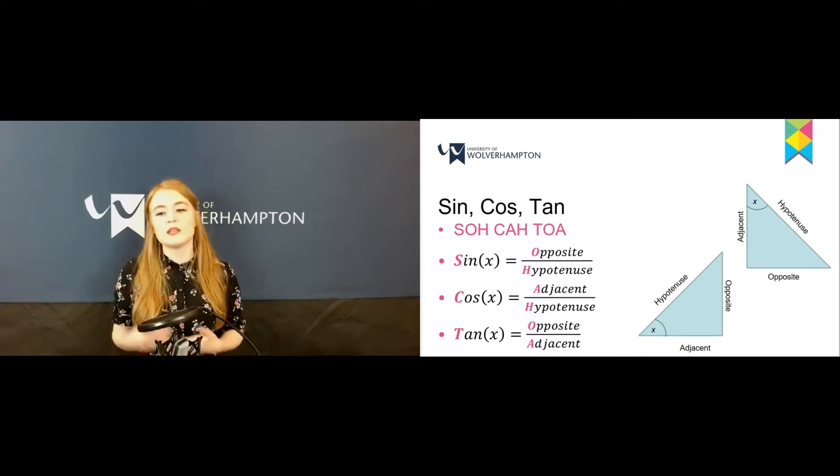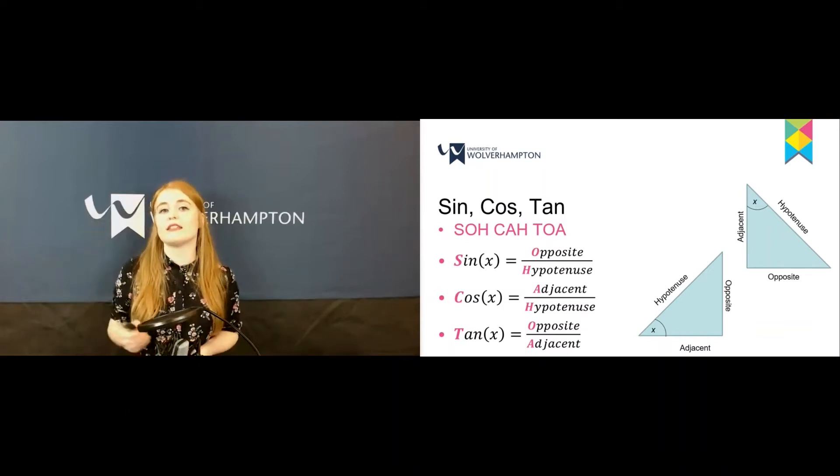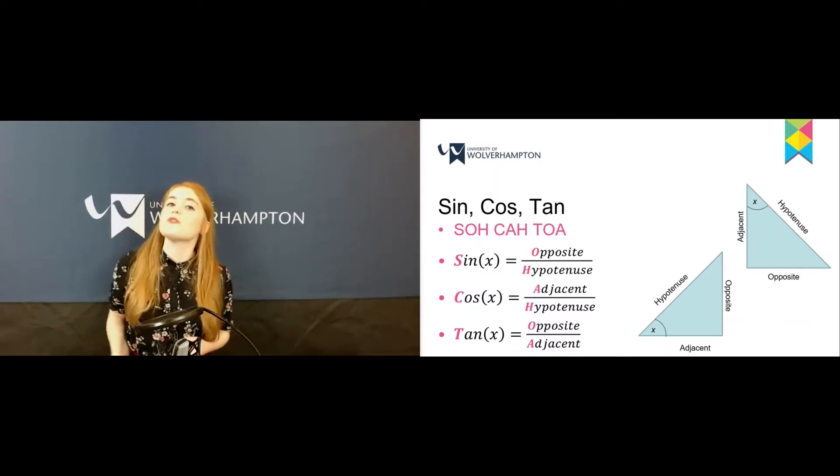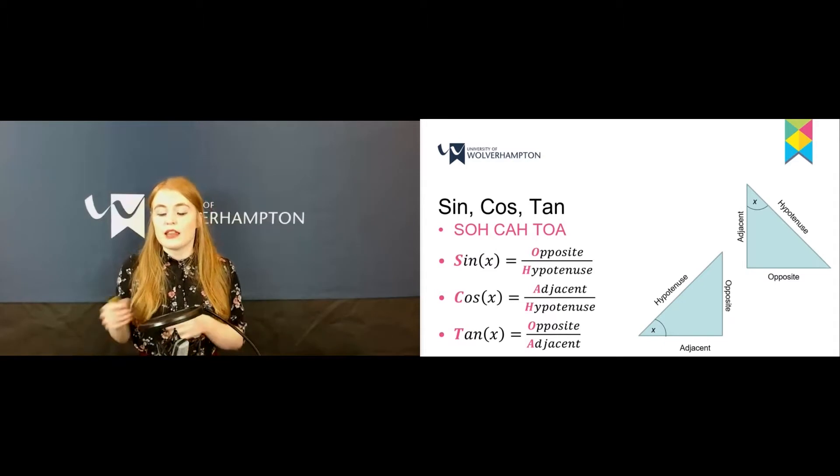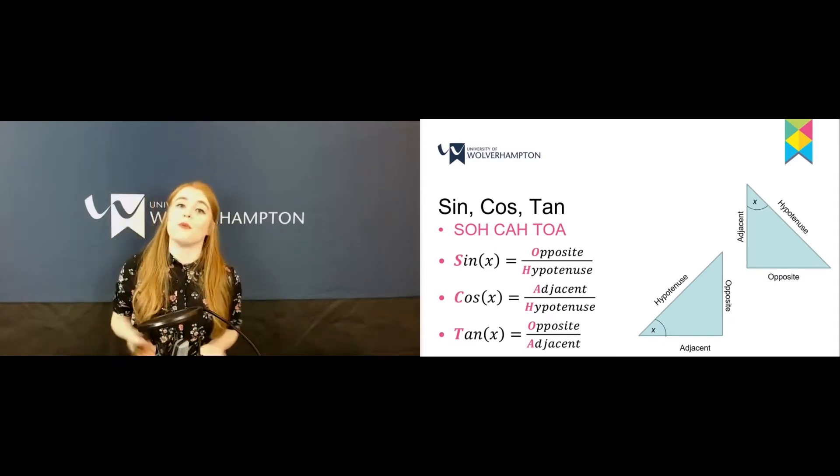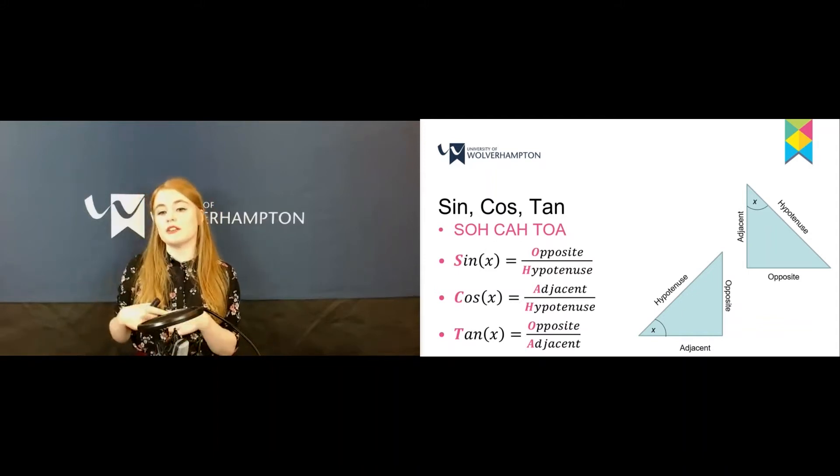When we're looking at pictures of triangles, the long slanted side is the hypotenuse. The opposite and adjacent depend on where the angle is. The side directly opposite the angle is labeled as the opposite, and the other side touching the angle is the adjacent.